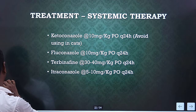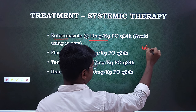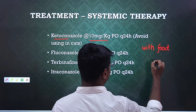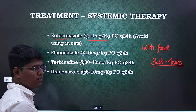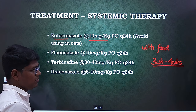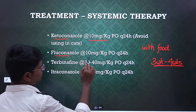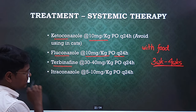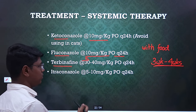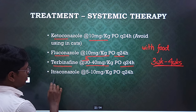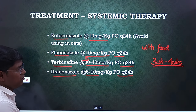Systemic therapy: ketoconazole at the dose range of 10 mg per kg body weight. All antifungal medication should be given with food, and treatment should be continued for a minimum of 3 to 4 weeks. The actual rule is 2 consecutive negative cytology results, but if you don't have cytology facilities, go for minimum 3 to 4 weeks of treatment. Fluconazole: 10 mg per kg body weight at 24-hour interval. Terbinafine: 30 to 40 mg per kg body weight at 24-hour interval. Itraconazole: 5 to 10 mg per kg body weight at 24-hour interval. If at all not required, do not use systemic therapy.